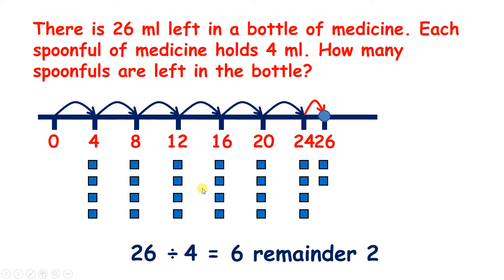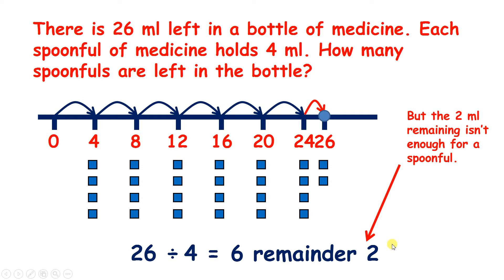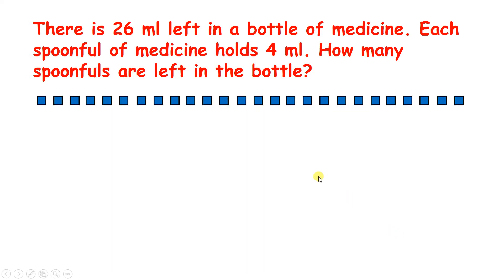We've shared twenty-six blocks. But remember, the question was asking us about twenty-six millilitres, so these two remaining blocks are really two remaining millilitres. And a spoonful is four millilitres, so the two millilitres remaining isn't enough for a spoonful. So there are six spoonfuls left in the bottle. Here we need to round down to six.